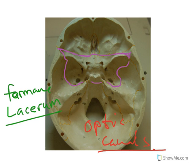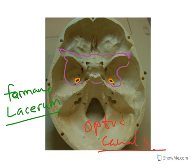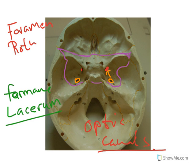Continuing on, using orange, I'm going to circle the foramen ovale — we can see that there. Then, going up north, we find in red the foramen rotundum.